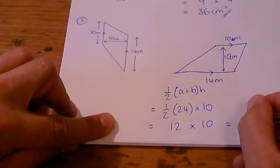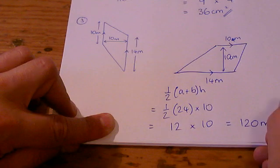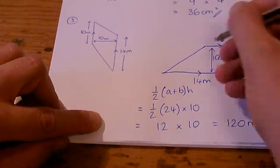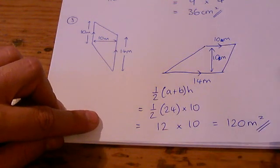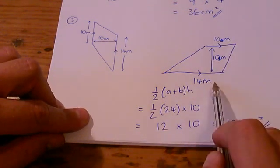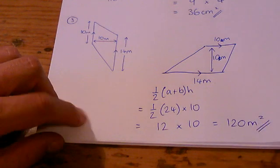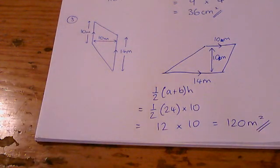And when I times that by 10, I get 120. And again, notice the unit metres squared this time. I wrote centimetres there again. Can't stop writing centimetres. Metres in each of these cases. So your answer needs to be in metres squared.